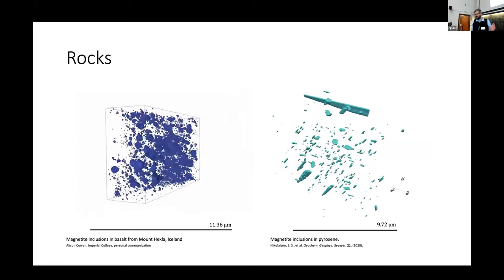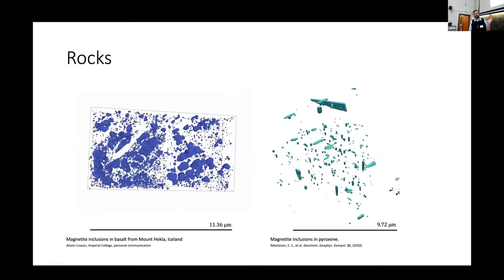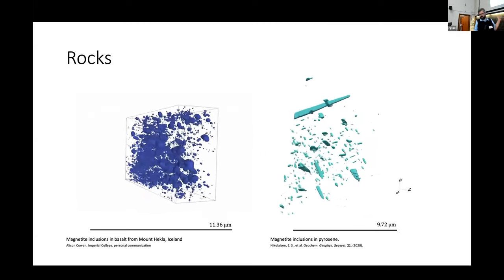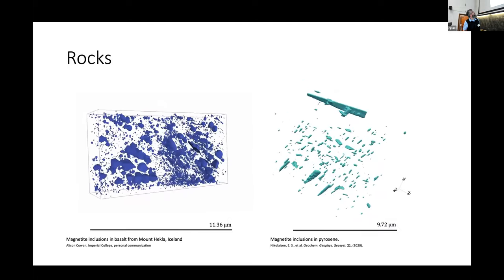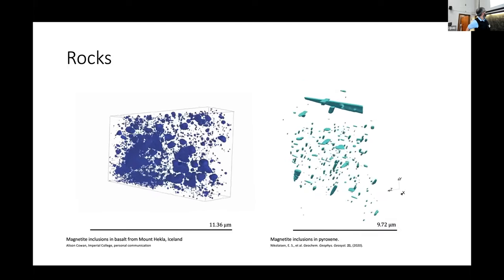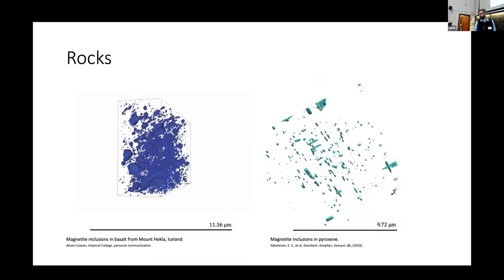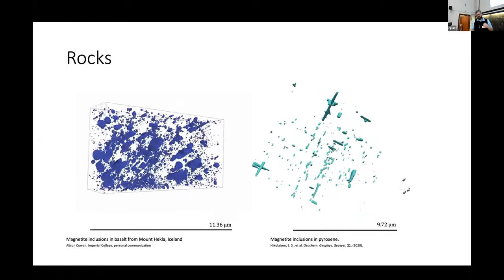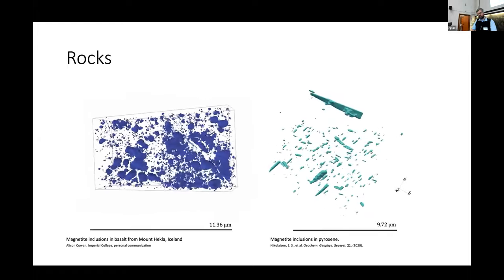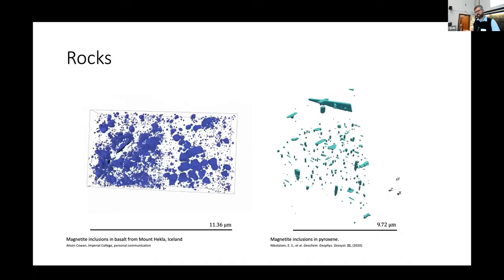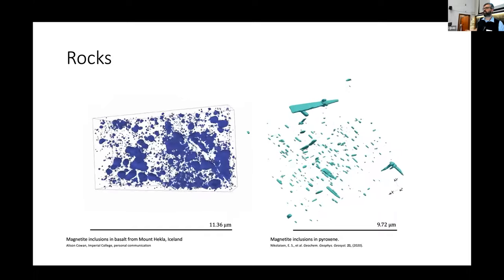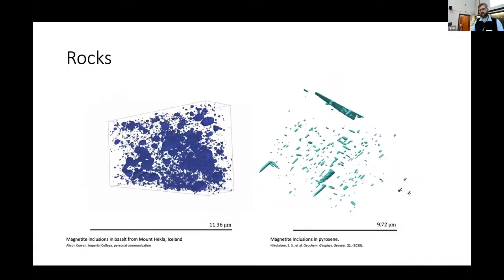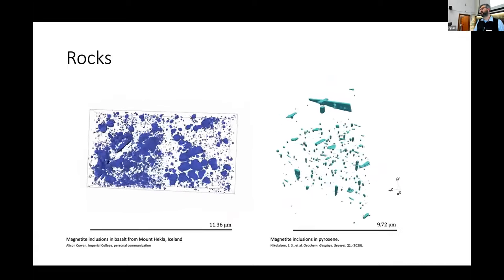Rocks really look like this. These are SEM focused ion beam slice and view images. The one on the left is from work by Alison Cowan at Imperial, and the one on the right is work by Ivan Michalson. You can see that the assemblages we deal with have an incredible range of sizes and geometries. These are definitely not going to be single domain grains.